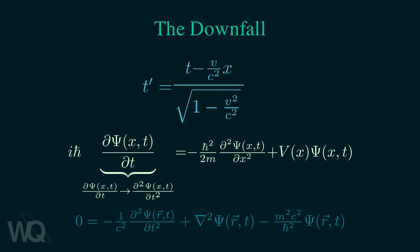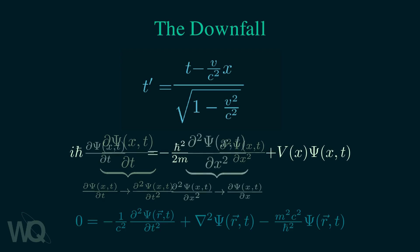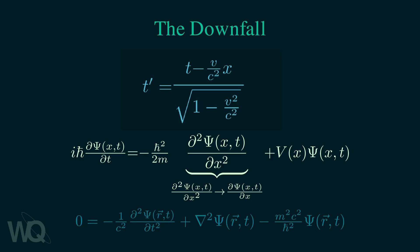Another approach is to let the spatial derivatives be of first order. Such an equation also exists, and it is called the Dirac equation. This equation describes spin-half fermions.